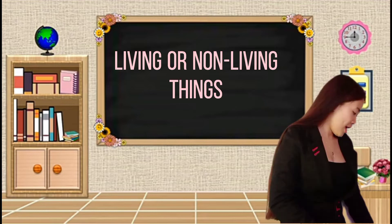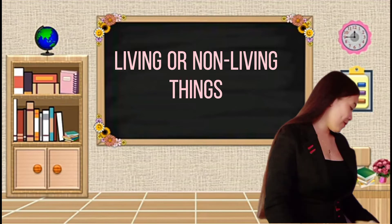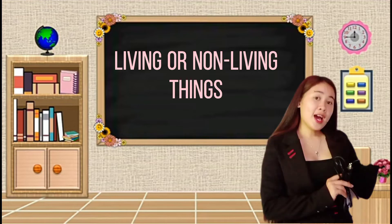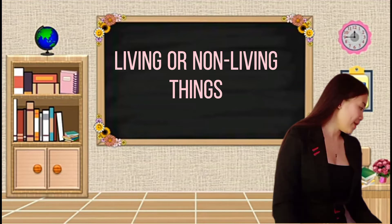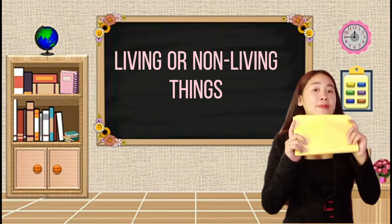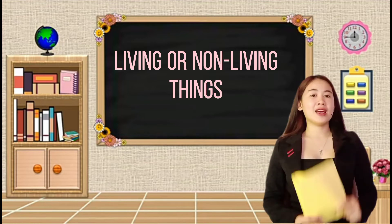So, how about this one? A pair of slippers. So, living or non-living? Non-living. Very good. And this one, this is an iron. So, living or non-living? It is non-living. So, lastly, what is this? A paper. So, living or non-living? It is non-living things. Very good.